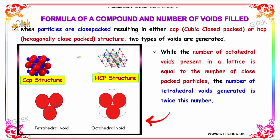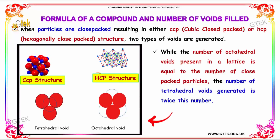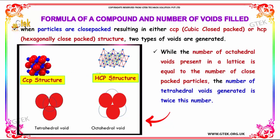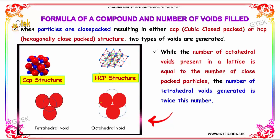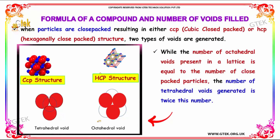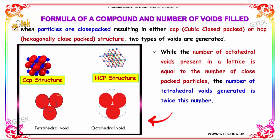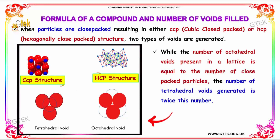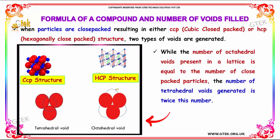When particles are closely packed, resulting in either cubic close-packed (CCP) or hexagonally close-packed (HCP) structure, two types of voids are generated. The number of octahedral voids present in the lattice is equal to the number of close-packed particles, and the number of tetrahedral voids generated is twice this number.